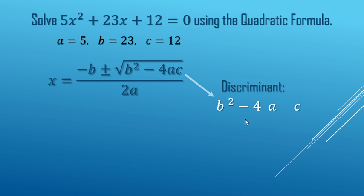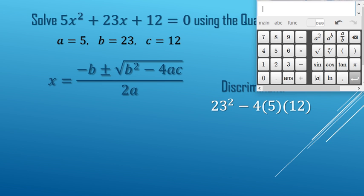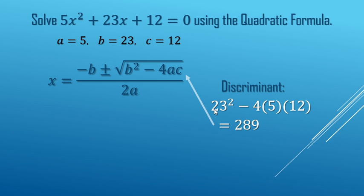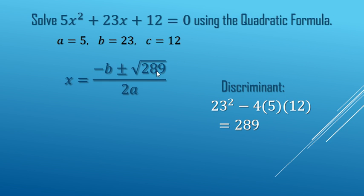Let's go ahead and replace those values with what they're equal to, and then we go to the calculator. So that's going to be 23 squared minus 4 times a times c, and we get 289. So that's going to go in this part right here, 289.